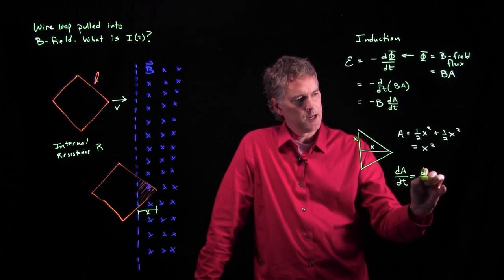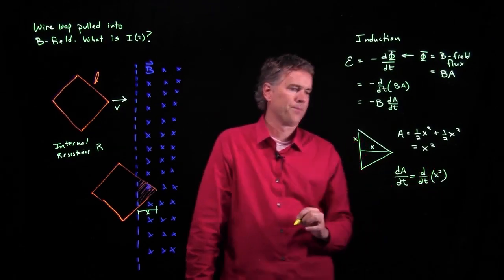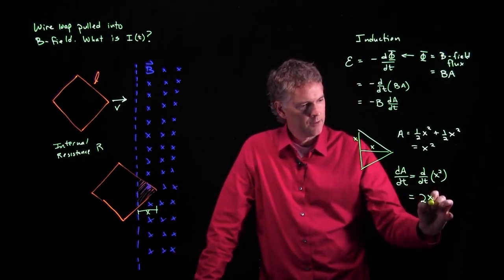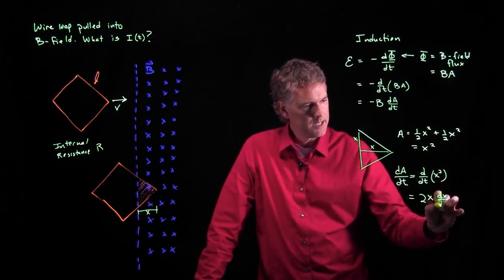What if I do a derivative of that area? So I want to take the time derivative of X squared. What do I get? Well, I pull down a 2, I get an X, but I have to remember that X is a function of time, and so I get dx/dt.